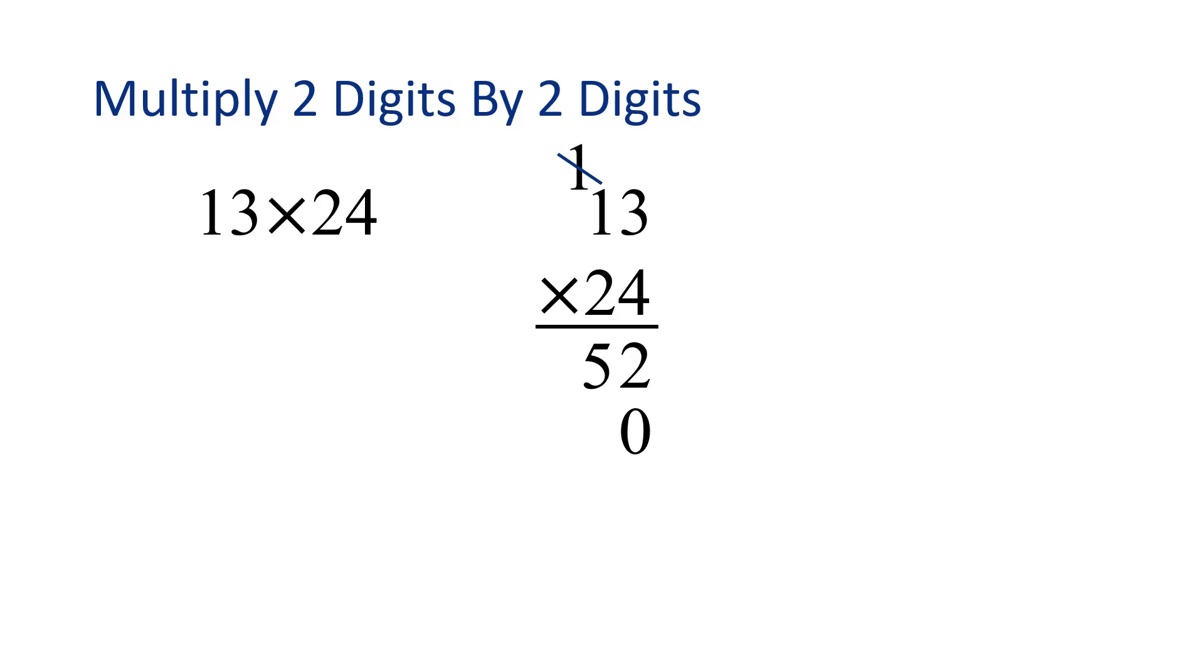Okay, now let's multiply 2 through the digits up top. 2 times 3 is 6. We have nothing to carry, because 6 is just a single digit. Now we multiply 2 times 1, which is 2. Great job!